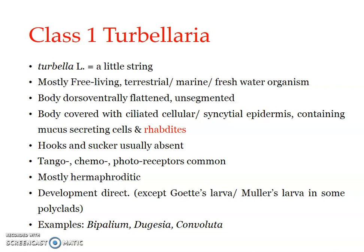The body is unsegmented — it is not differentiated into head, trunk, or tail. It is dorsoventrally flattened, as expected for a platyhelminth. The body is covered with a ciliated epidermis, which can be cellular or syncytial. It contains mucus-secreting cells and rhabdites. Rhabdites are rod-shaped sub-epidermal bodies, also known as rhabdoids, and they cover the body.